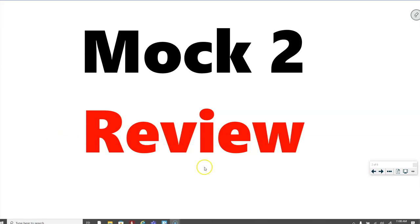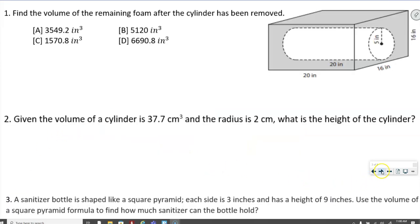In this video we're going to go over the Mach 2 review. The first question says find the volume of the remaining foam after the cylinder has been removed. So we're going to find the volume of this prism here, and then subtract from it the volume of the cylinder.